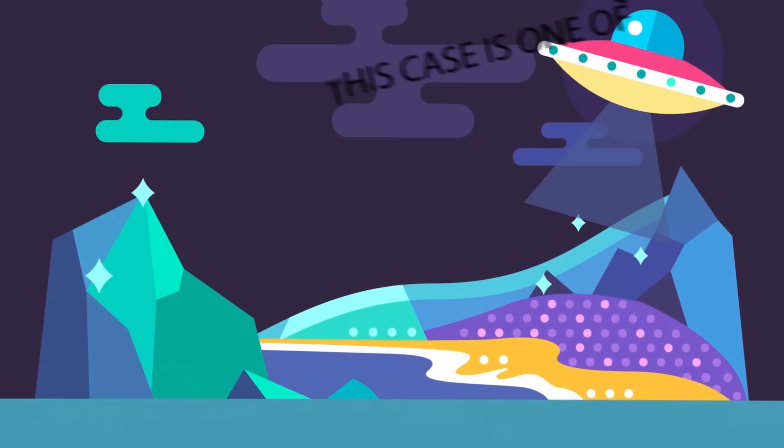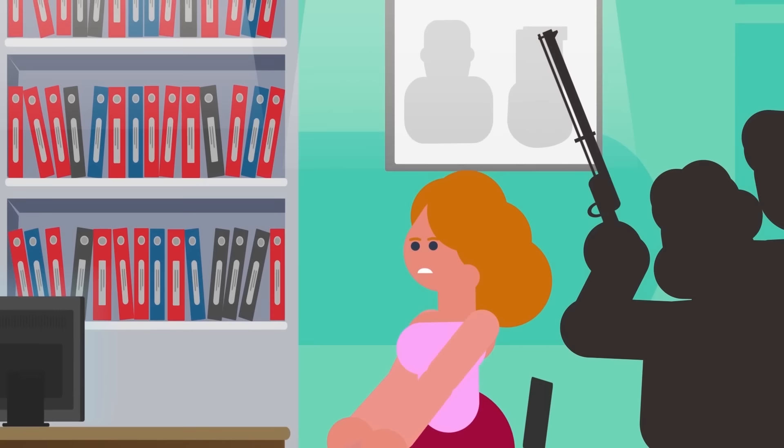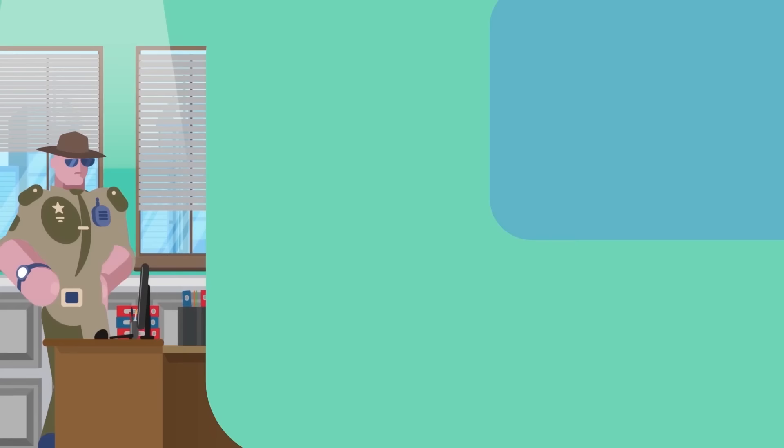On August 21, 1955, 5 adults and 7 children went to the local police station, all saying that their farmhouse had come under attack by aliens and they'd been fending them off for about 4 hours. It's true that many gunshots had been fired as bullet holes were found everywhere.